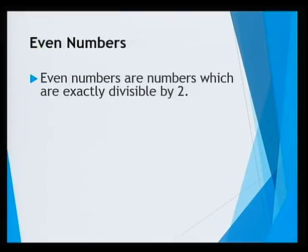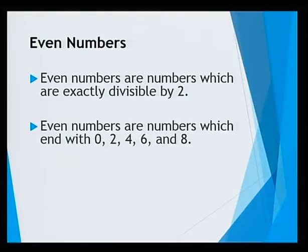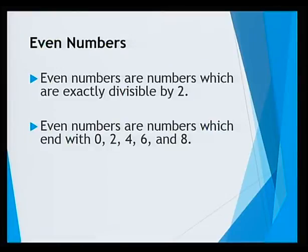Even numbers are numbers which are exactly divisible by 2. That is, there will be no remainder when dividing the number by 2. Even numbers are numbers which usually end with 0, 2, 4, 6, and 8. So any number ending with these will be an even number. Even a one-digit number being 2, 4, 6, 8, or 0 will be an even number.